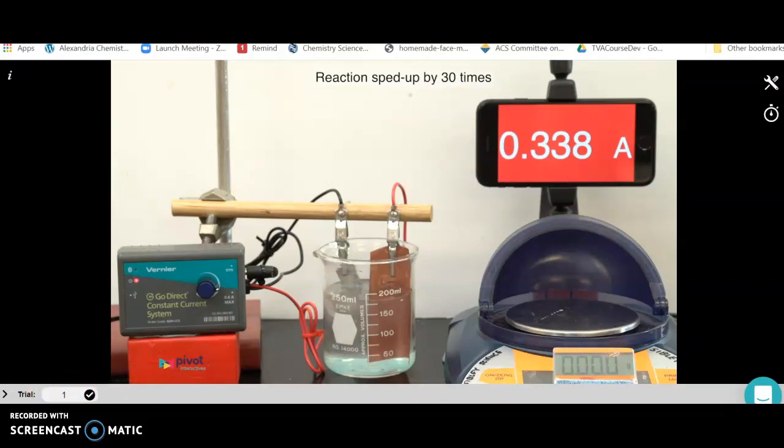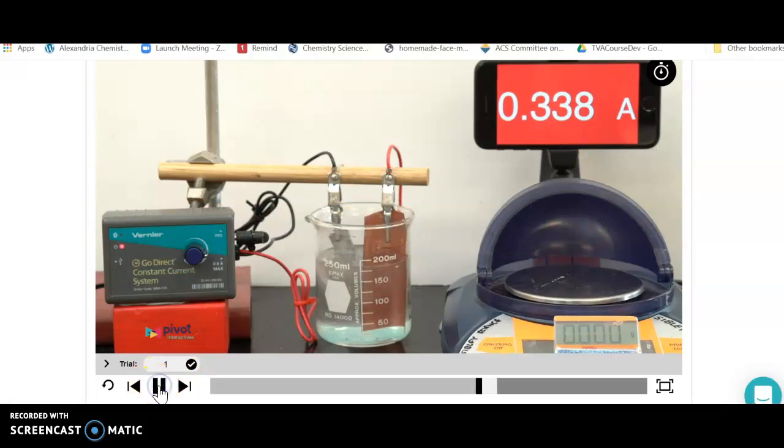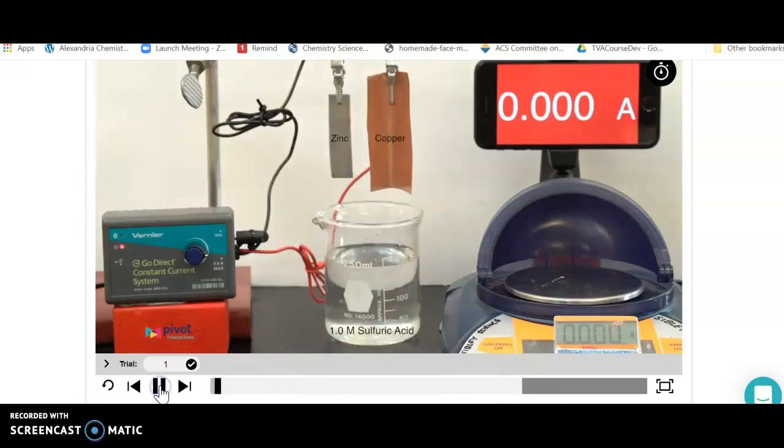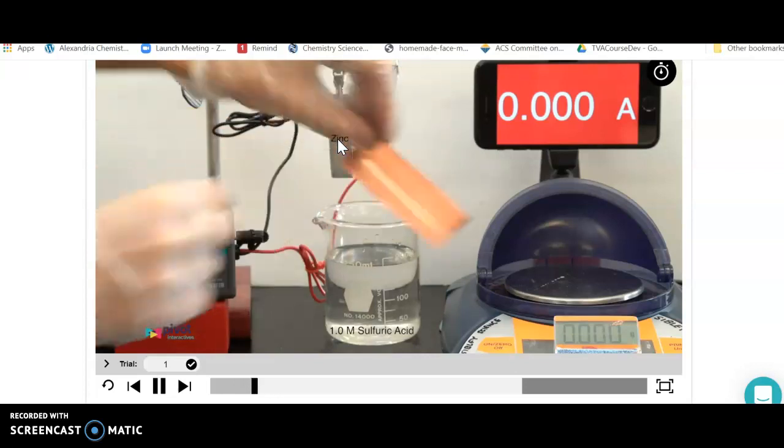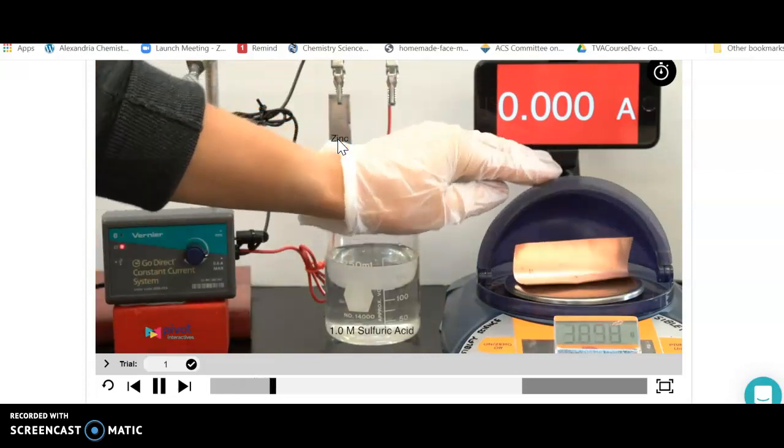When you start with trial one, you're going to go over here and hit play. As you hit play, what's going to happen is you're going to see copper and zinc up here.